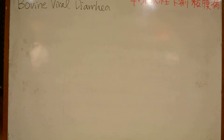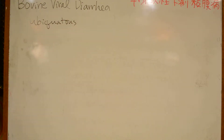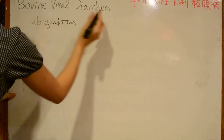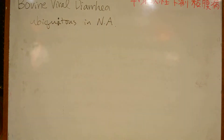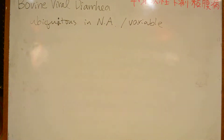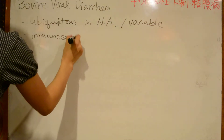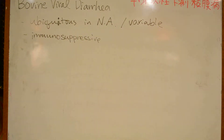Today's review is about Bovine Viral Diarrhea. Bovine Viral Diarrhea virus is ubiquitous in North America. It is extremely variable in presentation. It is important to remember that Bovine Viral Diarrhea virus is an immunosuppressive virus, and persistently infected animals are reservoirs.